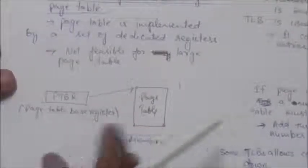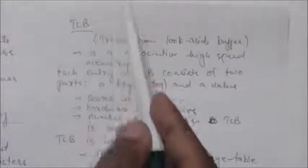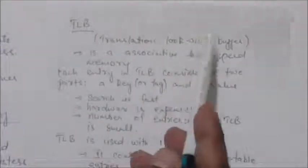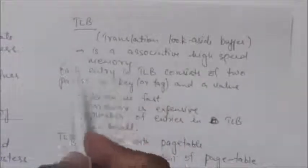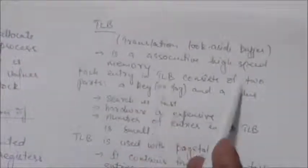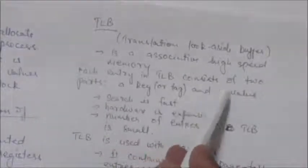Each entry in TLB consists of two parts: a key, also called a tag, and a value. Whenever an item is presented to this associative memory, the item is compared with all keys simultaneously.